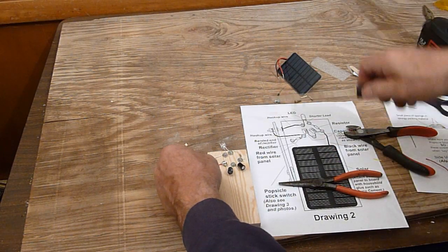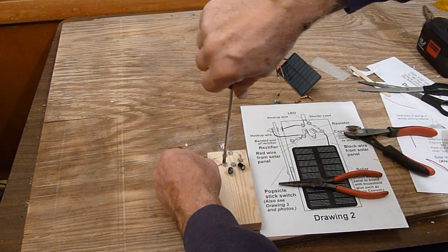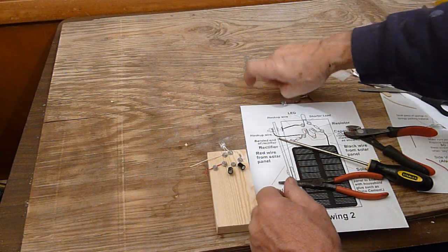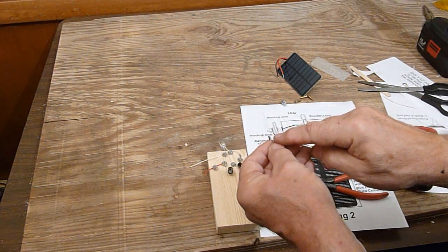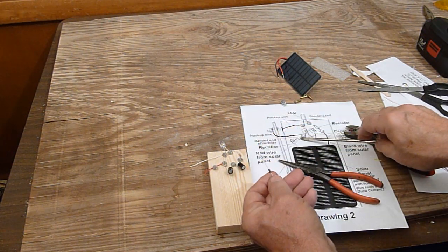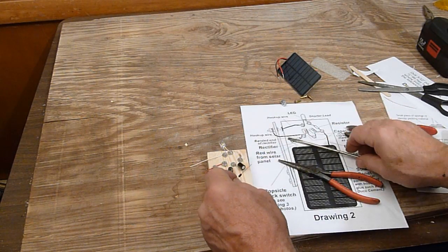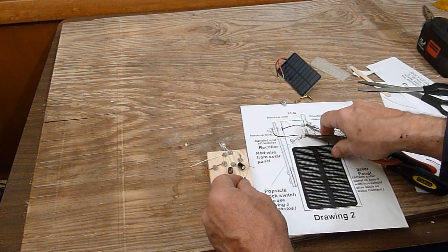But we also put in the rectifier. As we see in that diagram, there's the rectifier that goes here. Here's the rectifier. Now, look at this rectifier. There's a band on it. That band is actually shown in dark here. On here it's white. So we have to make sure this is connected correctly.